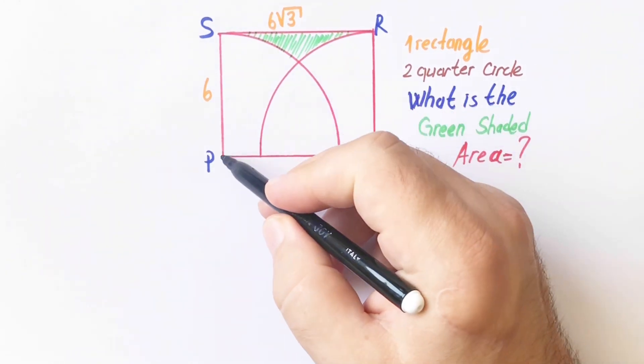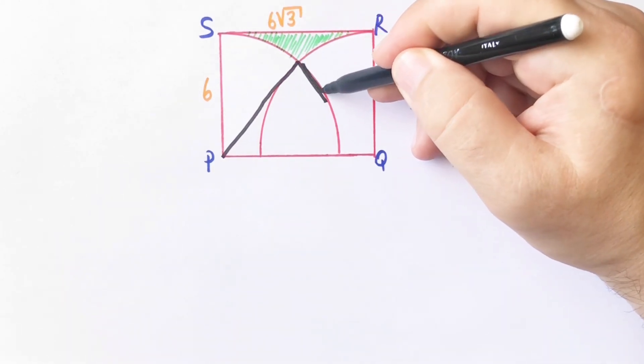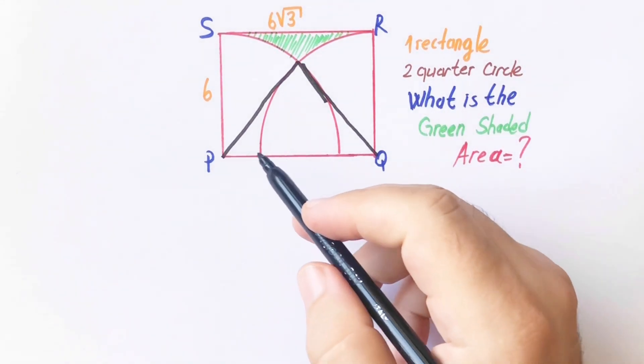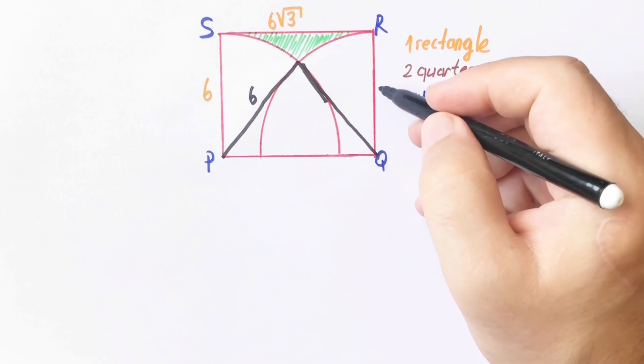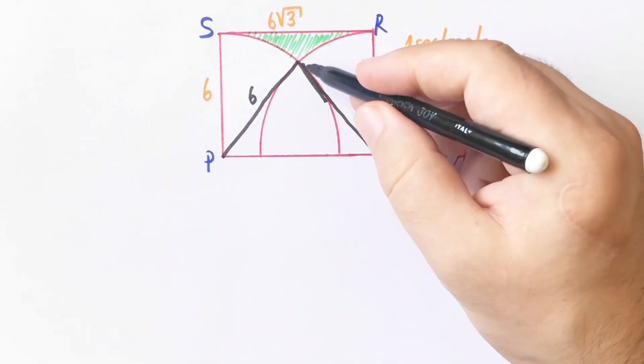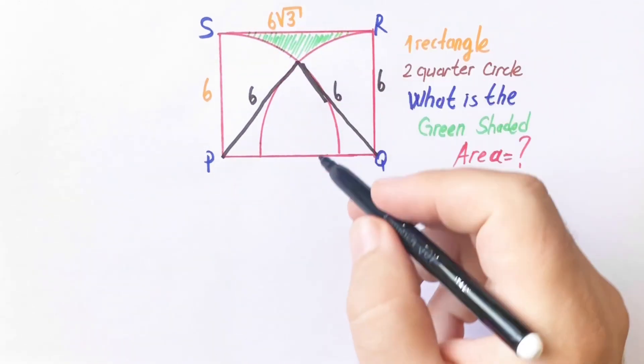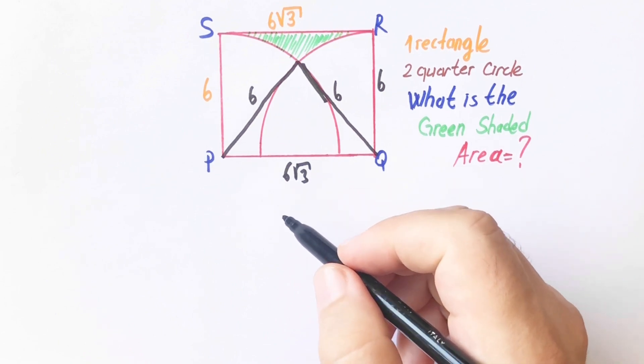First, if we connect radiuses like this, this length is 6 units and here is 6 because of the radius. This length is also a radius, so here must be 6 root 3.